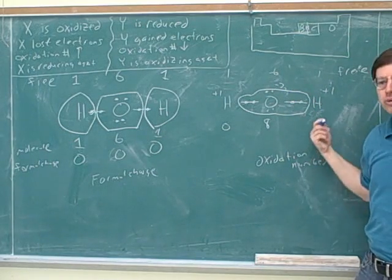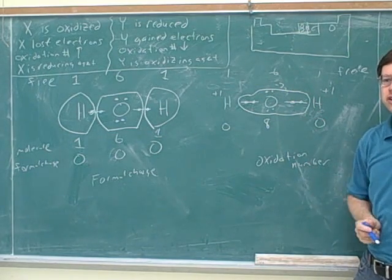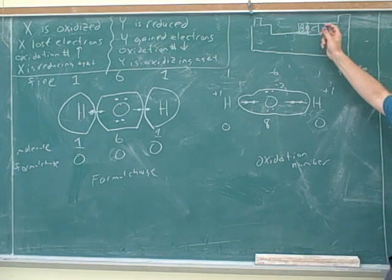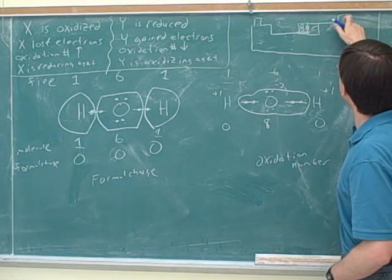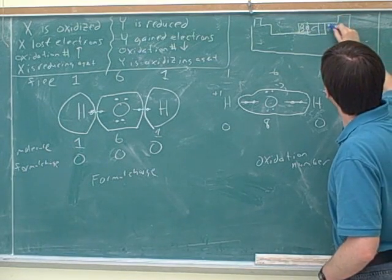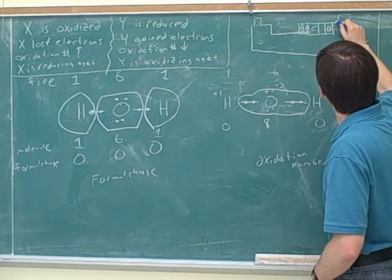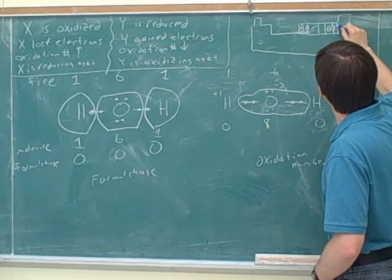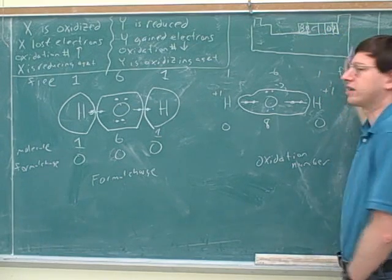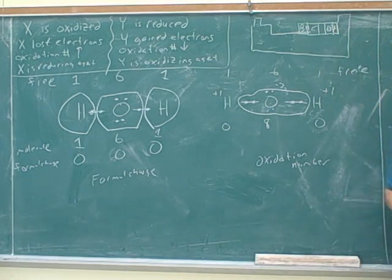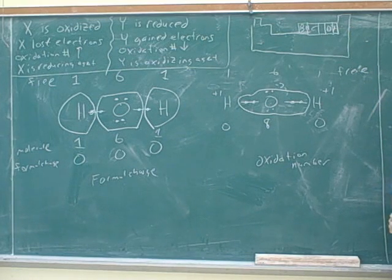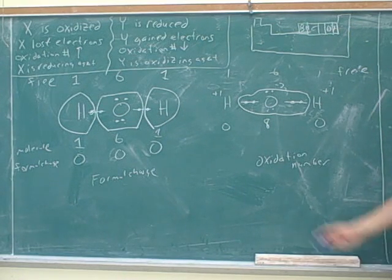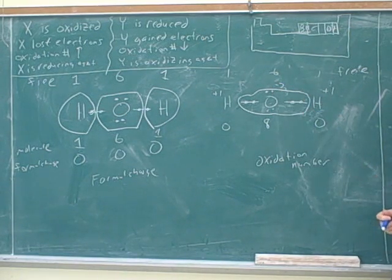So that explains the rule that oxygen usually has a negative 2 charge. You can also remember that because oxygen is in the second column from the right. Oxygen wants to gain two electrons to get a noble gas configuration, so that helps us remember why it should have negative 2.